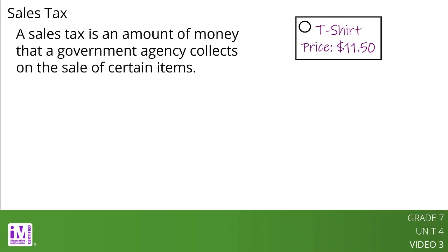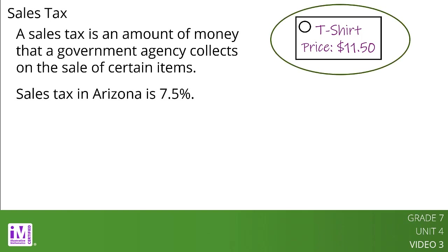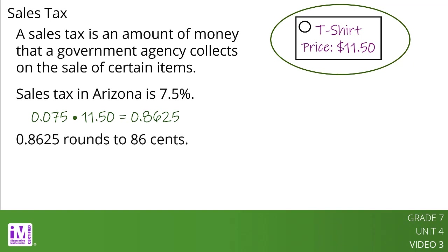For example, the sales tax in Arizona is 7.5%. If someone buys a t-shirt for $11.50, the sales tax is 0.075 multiplied by 11.5, or 0.8625, which rounds to 86 cents.